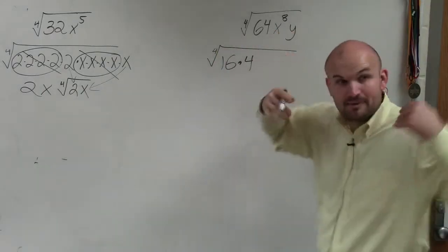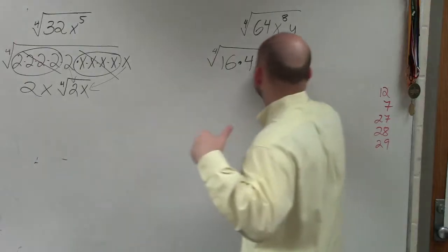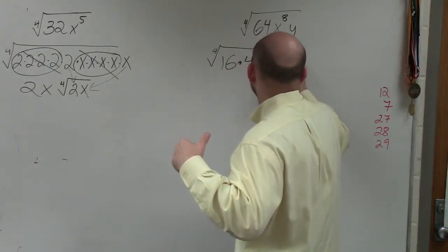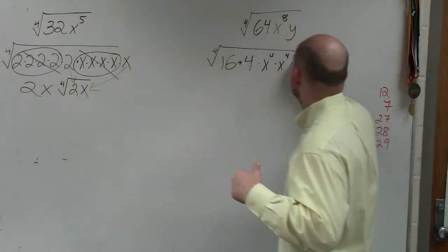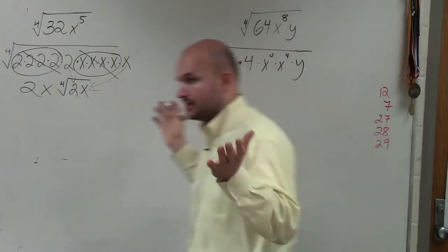I'm going to rewrite x to the eighth. Remember, I want to rewrite it as the power to 4. So I'm going to rewrite this as x to the fourth times x to the fourth times y. Does everybody agree with me what I did?